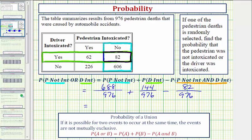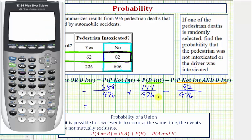So let's go to the calculator. Notice we already have a common denominator. The numerator is going to be, in parentheses, 688 plus 144 minus 82, and all this is divided by 976. We'll press enter. This gives us a decimal approximation, but if we press math, enter, enter, this gives us a simplified fraction, which is 375 over 488. This would be the exact probability.